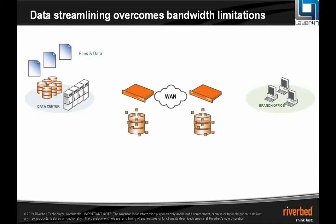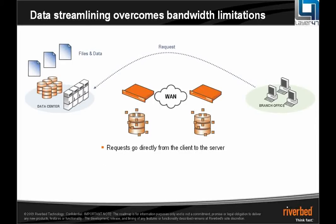The first part of the technology is what we do for a large amount of traffic sent over the WAN. It's what we call data streamlining. Imagine these appliances have just been installed on your network and all your servers are located in the data center. Our technology will always provide information directly from the server — we will never attempt to provide information from the edge of the network. Everything comes from the server.